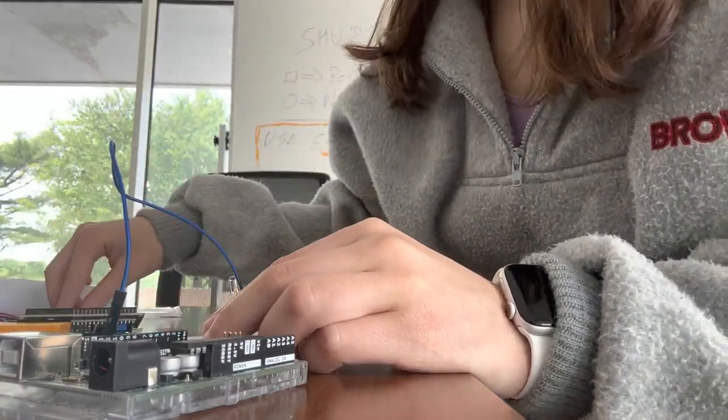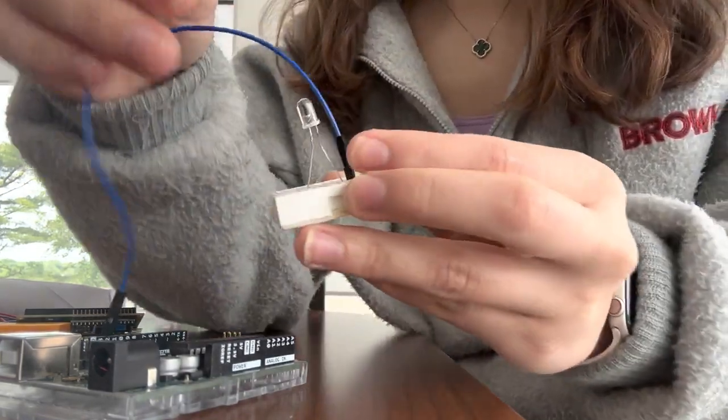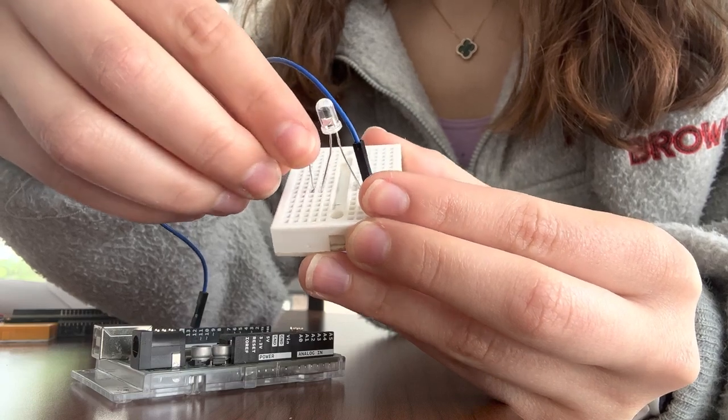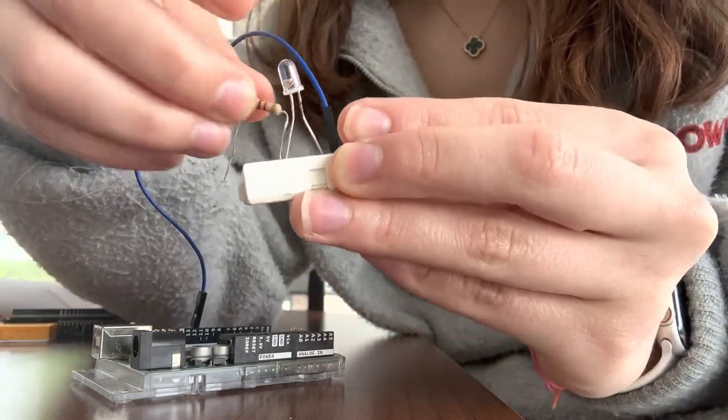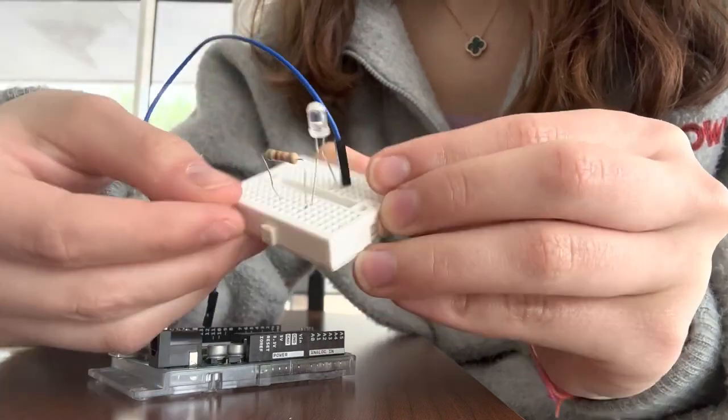Then we're going to take our resistor, one of our resistors, and we're going to put it on the same line as the shorter LED wire. One line there, and then you can put the other one anywhere else that you want.